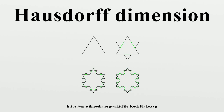In mathematical terms, the Hausdorff dimension generalizes the notion of the dimension of a real vector space — that is, the Hausdorff dimension of an n-dimensional inner product space equals n. This underlies the earlier statement that the Hausdorff dimension of a point is zero, of a line is one, and so on, and that irregular sets can have non-integer Hausdorff dimensions.